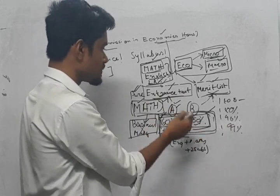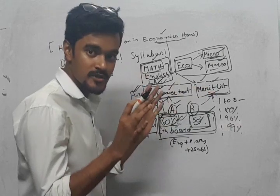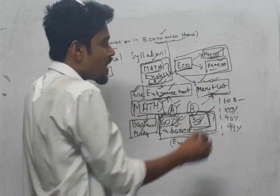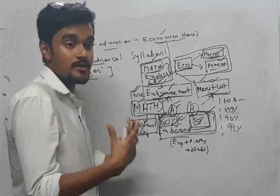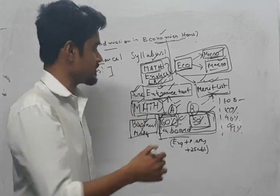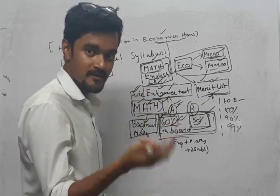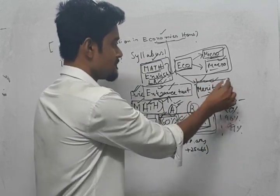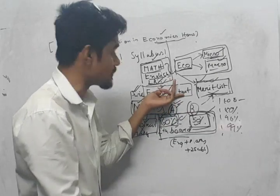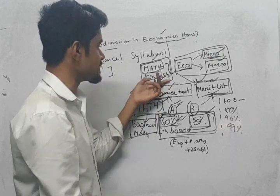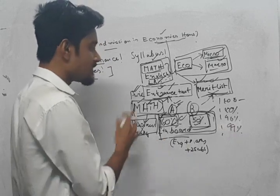Once you have cleared the entrance exam or the merit list, the process is: first get good marks, second have pure maths, third go for the entrance exam — studying quant, qualitative reasoning, and economics (micro and macro). If there is no entrance exam, go through the merit list selection process.